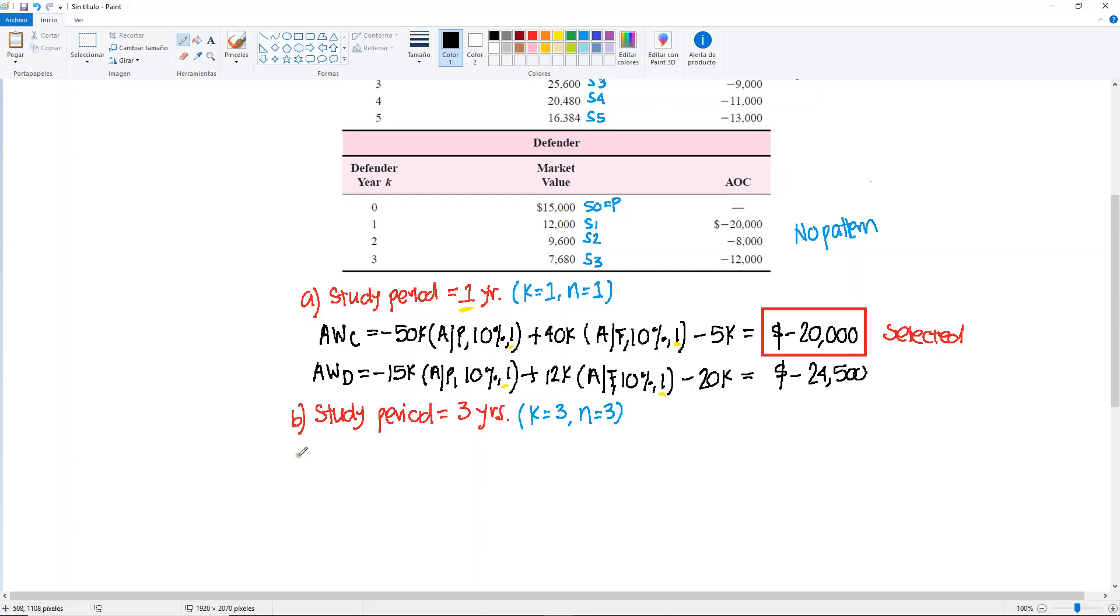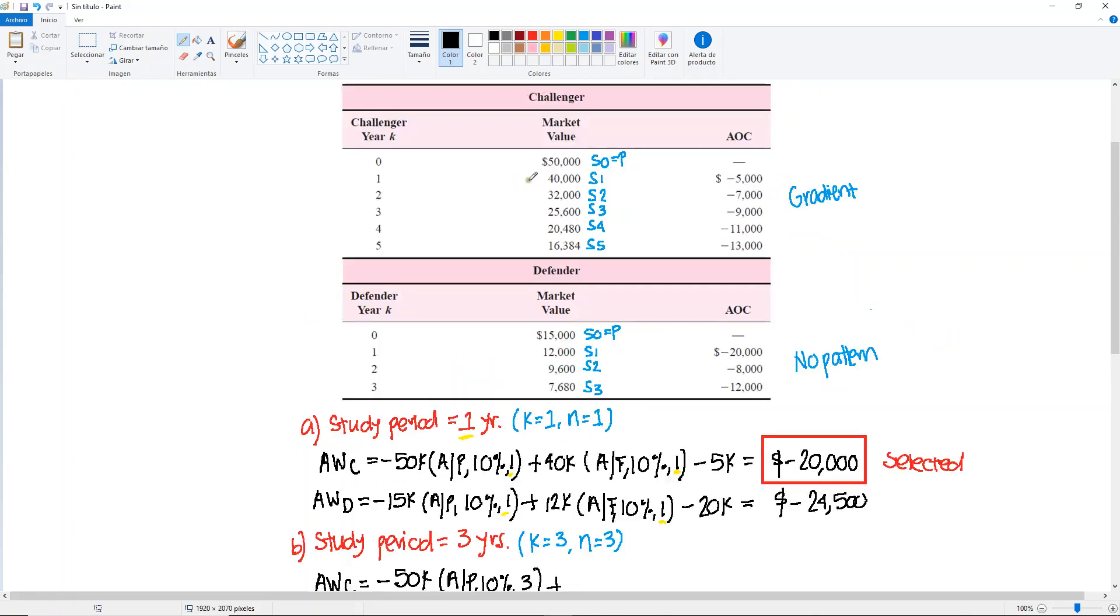Meaning that we're only going to do it, we're not going to do it for years 1, 2, and 3, we're only doing this for year 3, or an N of three years. So we do the annual worth of the challenger, minus 50,000, find A given P, 10% for three years,